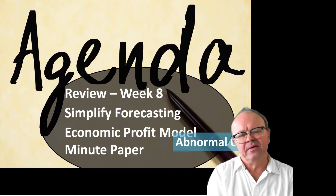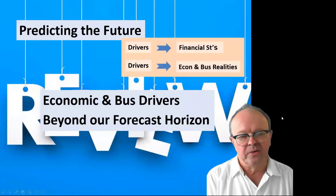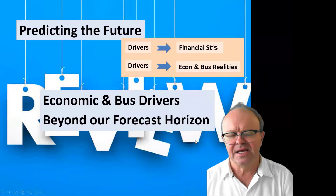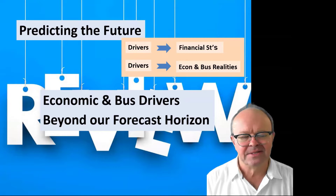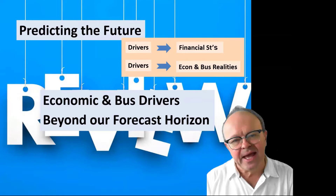We'll have a look at the economic profit model by focusing just on the operations — both theoretically and how we're able to do that — as we focus on abnormal operating income and not abnormal earnings. Last week, we were looking at predicting the future, and we saw there are the accounting drivers of the financial statements and the economic and business drivers of the economic and business realities. We're focusing on the economic and business drivers and how we need to move beyond the numbers.